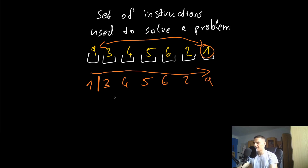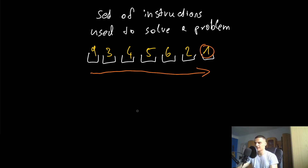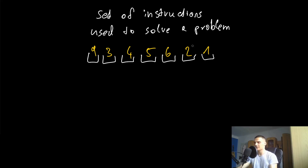Then you ignore the first element and do the same thing for the rest of the list. Going through 3, 4, 5, 6, 2, 9 — the new minimum is 2. So you take 2 and swap it into the second position, giving you 1, 2, 4, 5, 6, 3, 9. Then you do the same with 3 into the third position, and so on until the list is sorted. This kind of sorting algorithm is called selection sort — it picks the smallest number, puts it in the first position, picks the second smallest, puts it in the second position, and so on.